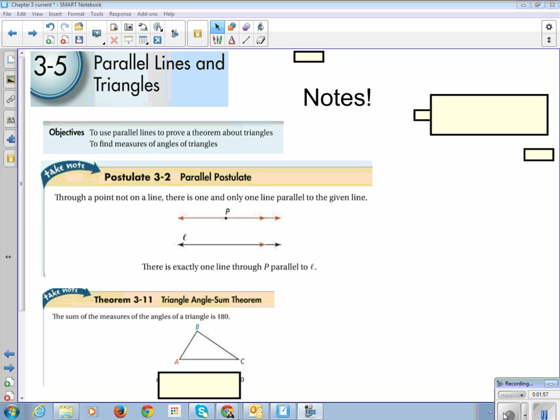So theorem 3-11, the Triangle Sum Theorem. The sum of the measures of the angles of a triangle is 180 degrees. Always. If it's a triangle, their angles add up to 180 degrees.